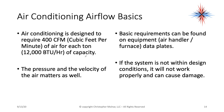Air conditioning is designed to require 400 CFM — cubic feet per minute — for each ton of capacity. A ton of capacity is 12,000 BTUs per hour. The pressure and velocity of the air matters as well. Basic requirements can be found on the equipment data plate on your air handler or furnace. If the system is not within design conditions, it's not going to work properly and can cause damage.